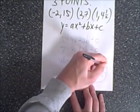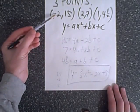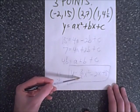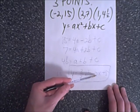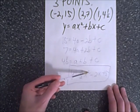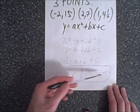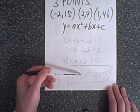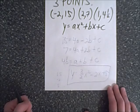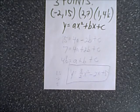We can check easily by plugging in all three points. For x = negative 2: 4 × three-halves = 6, minus negative 4 gives 10, plus 5 is 15. ✓ For x = 2: 4 × three-halves = 6, minus 4 is 2, plus 5 is 7. ✓ For x = 1: three-halves minus 4/2 = negative one-half, plus 10/2 = 4.5. ✓ You can also graph it to confirm. And that's how you do it.